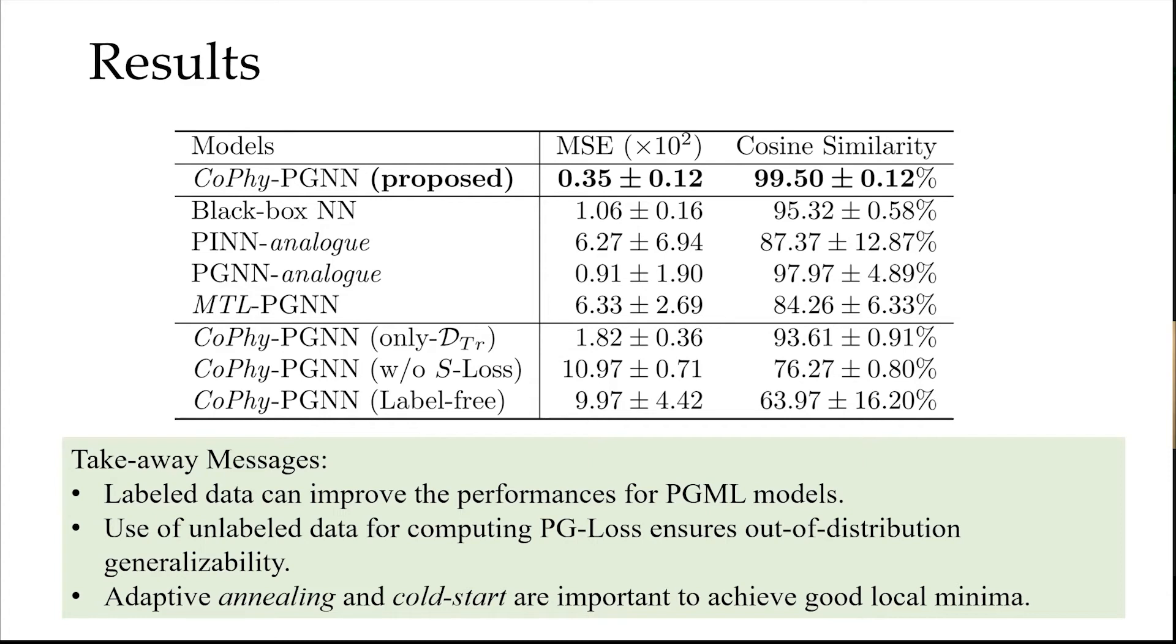We can see that label data can improve the performance for PGML models. For many existing methods they tend to use no label data but only relies on physics to find out a solution. We find out that label data can actually stabilize the prediction. Using unlabeled data for computing PG loss ensures out of distribution generalizability. Adaptive annealing cold-start are important to achieve, to reach a good global minima.